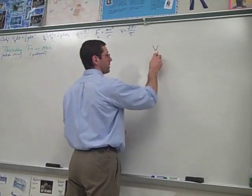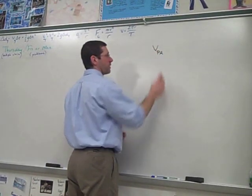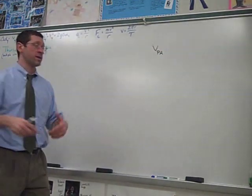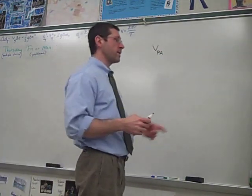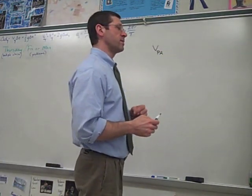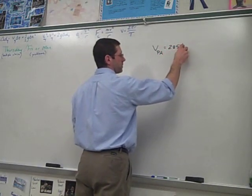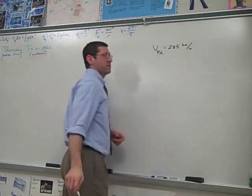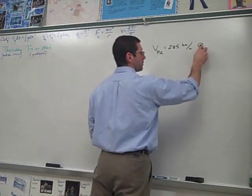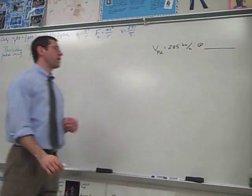The first one is the plane flying relative to the medium that it's in, the air. It tells us that the plane is traveling 285 kilometers per hour relative to the air, but we do not know the direction so I'll leave a blank there for that.